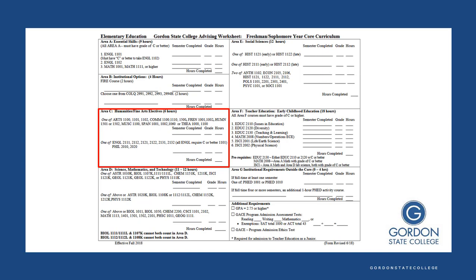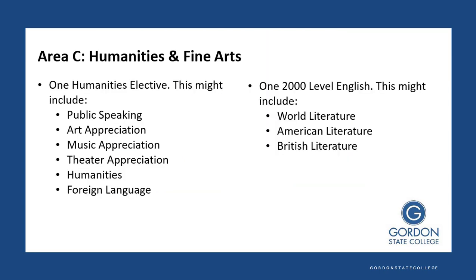Next, we have Area C, which is the Humanities and Fine Arts electives. You want to select one Humanities elective — we often recommend Public Speaking, but you might also choose Art, Music or Theatre Appreciation, Humanities, or a Foreign Language. You also want to take one 2000-level English course. This might include World Literature I or II, American Literature I or II, or British Literature I or II. You can take World Literature II without taking World Literature I, as they are broken apart by time period. Any World Literature, American Literature, or British Literature course will work.